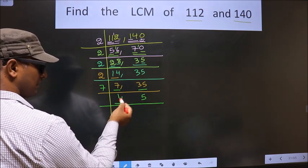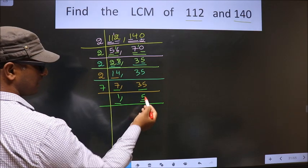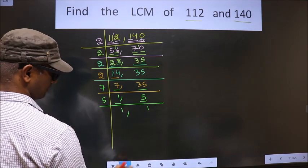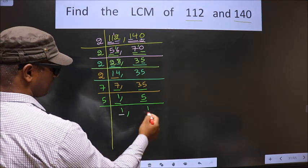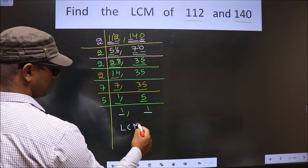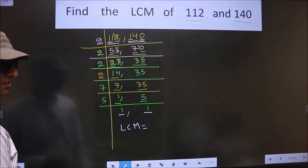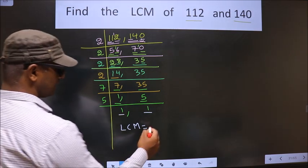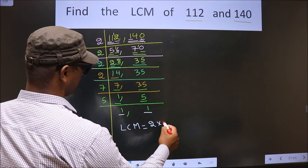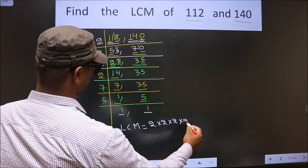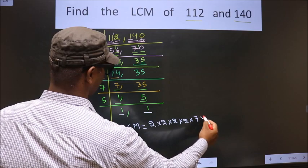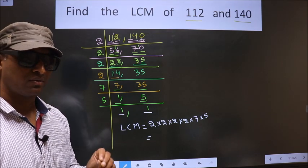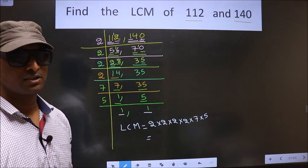Now here we got 1, so focus on the other number, which is 5. 5 is a prime number, so we take 5 once: 5 × 1 = 5. Now we have 1 in both places. The LCM is the product of all these numbers: 2 × 2 × 2 × 2 × 7 × 5. Multiply all these numbers and whatever you get is your LCM.